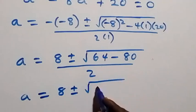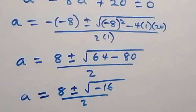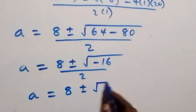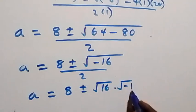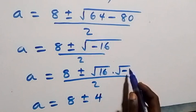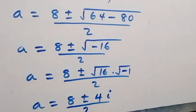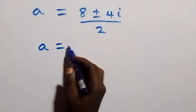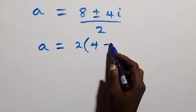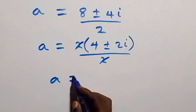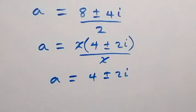From here we have a equals to 8 plus or minus square root of minus 16, over 2. We can write root of minus 16 as root 16 times root of minus 1, which is 4i. So a equals to 8 plus or minus 4i over 2. Factoring out 2, we have a equals to 2(4 plus or minus 2i) over 2, and the 2's cancel, giving a equals to 4 plus or minus 2i.